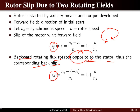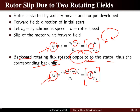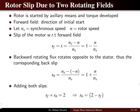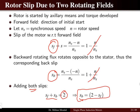When we add the forward slip s_f and backward slip s_b, the n/ns terms cancel and we get s_f + s_b = 2, which is a constant. Hence, the backward slip equals 2 minus the forward slip: s_b = 2 − s_f. This is why the torque-speed characteristic varies from 0 to 2. At standstill the forward torque and backward torque are equal and opposite, giving zero net starting torque.